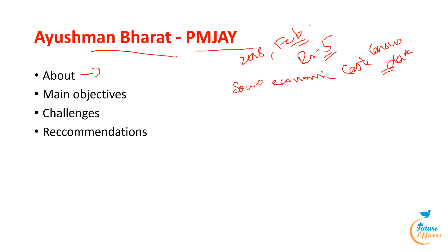The program is funded in the following proportions: 100% funding from the Centre for Union Territories without a legislature; 90% for northeastern states and Jammu & Kashmir, Himachal Pradesh, and Uttarakhand; and a 40 to 60 percentage split for all states and Union Territories with their own legislature.